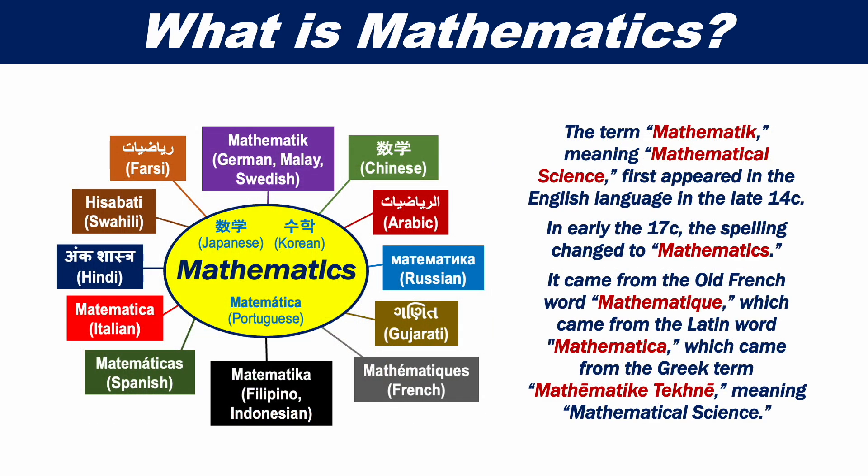The term mathematics, with K at the end, meaning mathematical science, first appeared in the English language in the late 14th century. In the early 17th century, the spelling changed to the modern form mathematics. It came from the old French word mathematique, which came from the Latin word Mathematica, which came from the Greek term Mathematique Technique, meaning mathematical science.